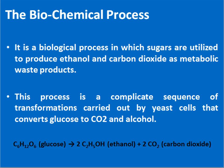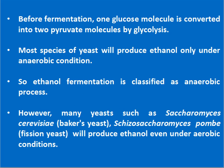This process is a complicated sequence of transformations carried out by yeast cells that converts glucose to carbon dioxide and alcohol. Before fermentation, one glucose molecule is converted into two pyruvate molecules by glycolysis, and as we all know, glycolysis is the first level of aerobic respiration. Most species of yeast will produce ethanol only under anaerobic conditions, so ethanol fermentation is classified as an anaerobic process.